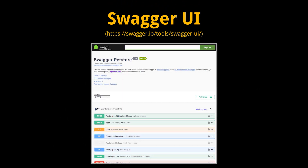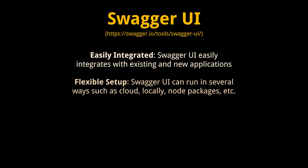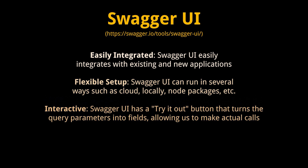Now that we have our documentation created with our editor, we need a way to share it with our users. Swagger UI displays them as interactive API documentation. It takes the YAML file and converts it into a user-facing documentation that lets your users try out the API calls directly in the browser. Some key features of the UI include: easy integration with existing and new applications, flexible setup — Swagger UI can run in several ways such as cloud, locally, or Node packages.